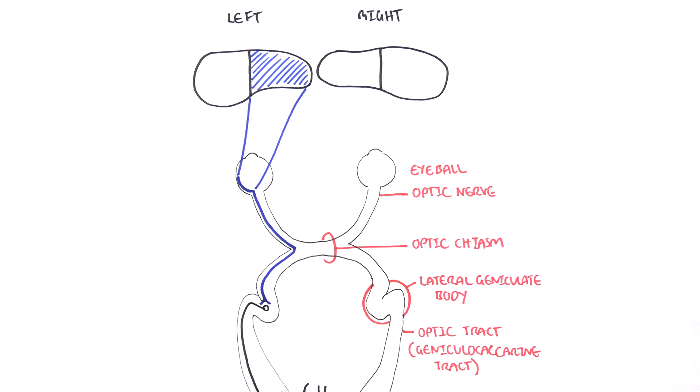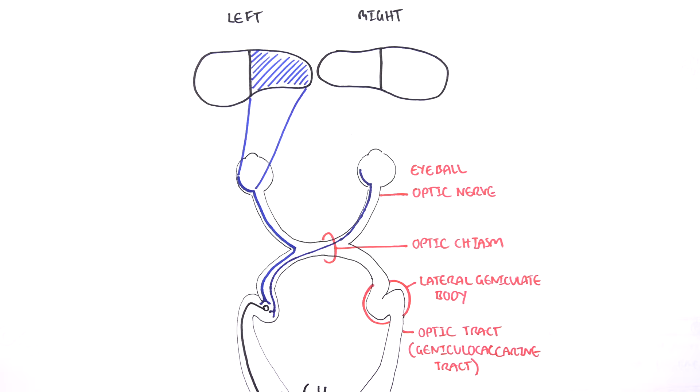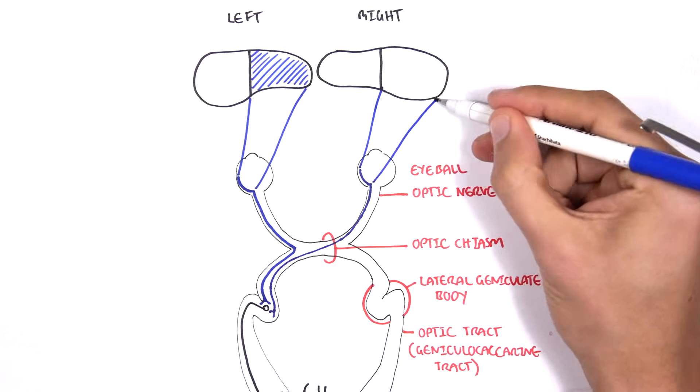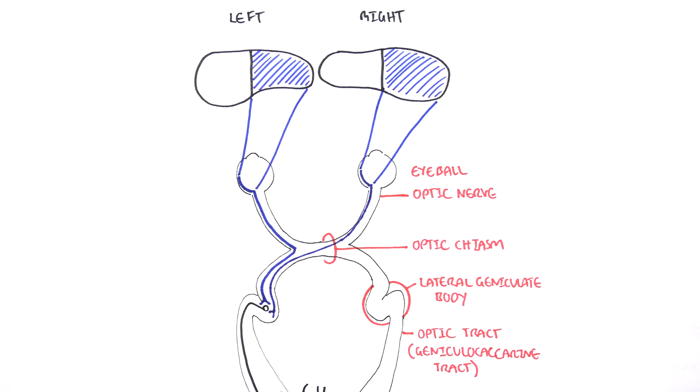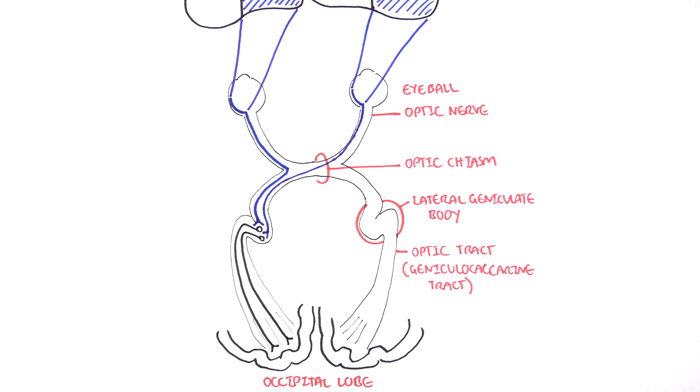The blue nerve on the right eyeball here will capture images from the right temporal field and will carry this information down the optic nerve and will cross over at the optic chiasm and synapse with the neurons of the left lateral geniculate body. The nerves will then carry the information to the occipital lobe.